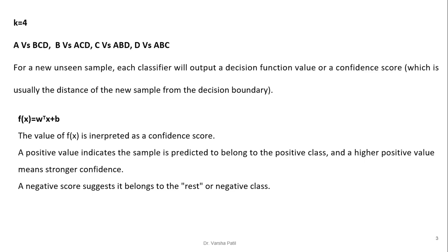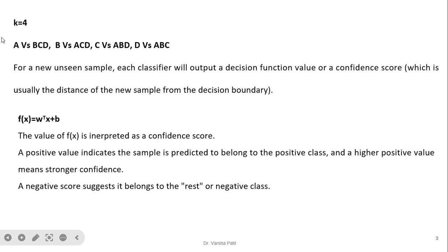For example, if our dataset has four class labels, then k equals four. We train four classifiers: A versus B, C, D; B versus A, C, D; C versus A, B, D; and D versus A, B, C. For a new unseen sample, each classifier will output a decision function or confidence score, which is the distance of the new sample from the decision boundary.